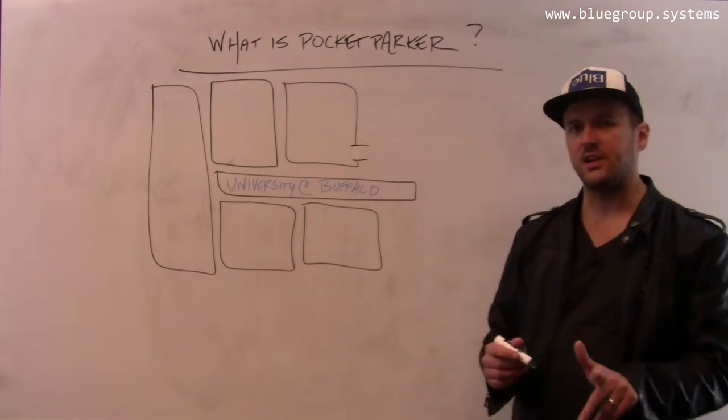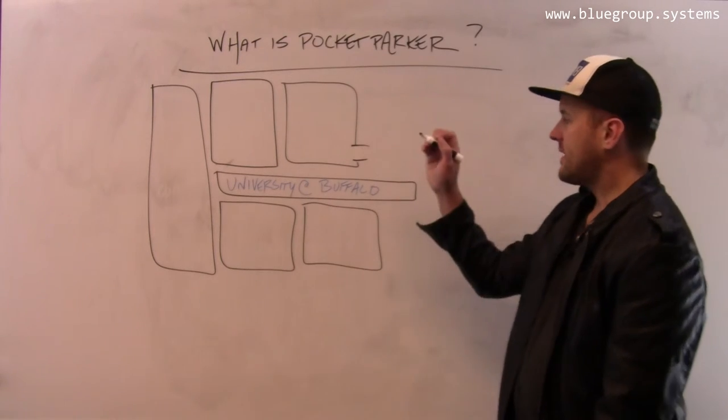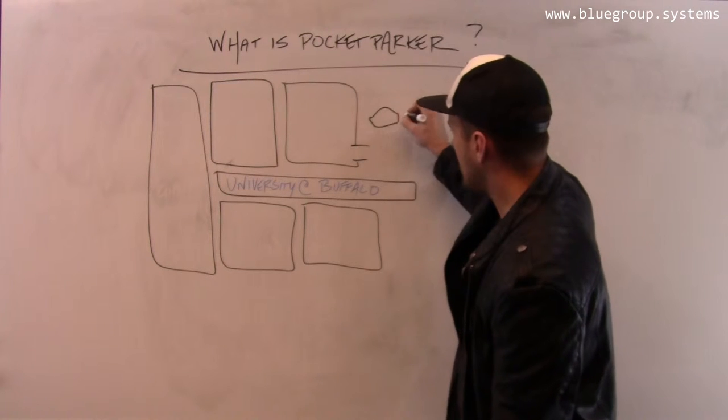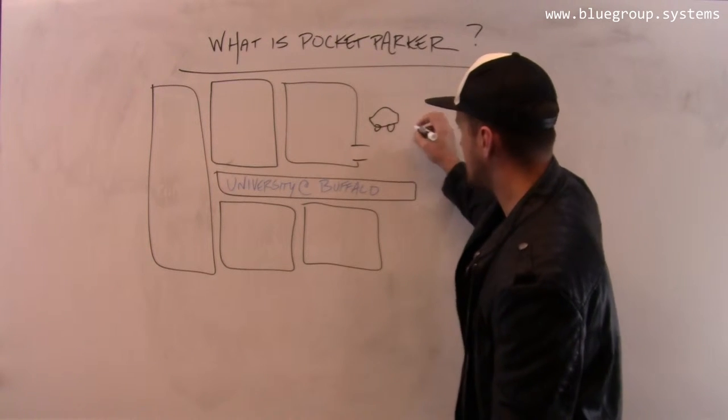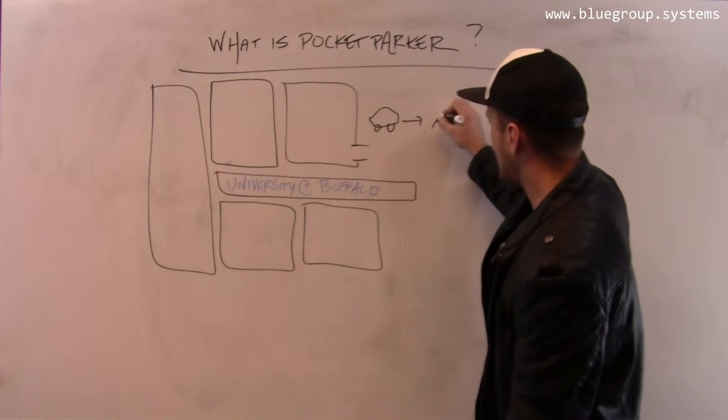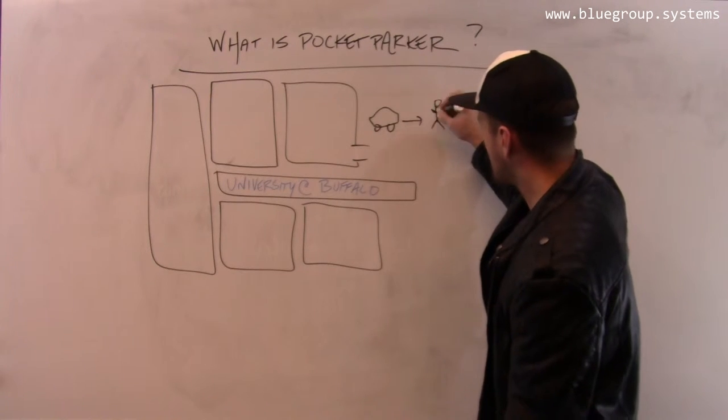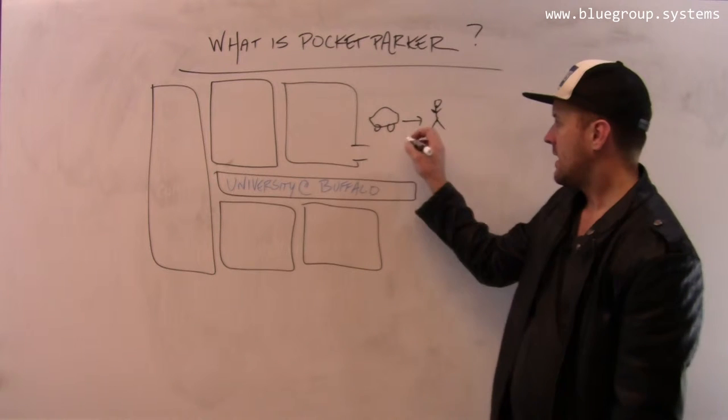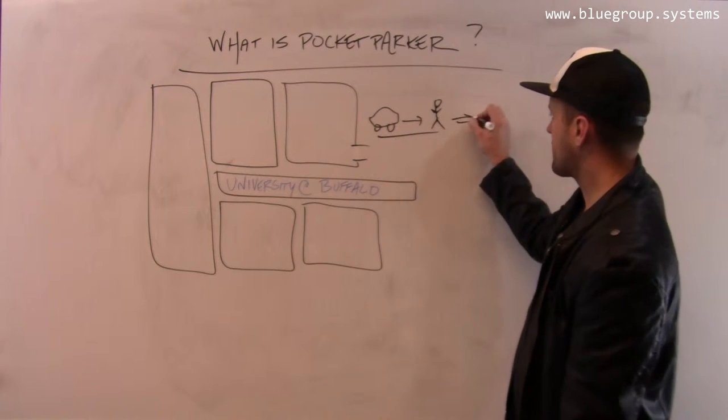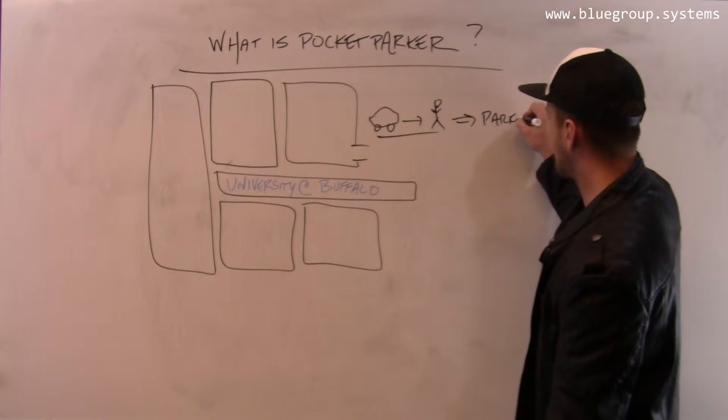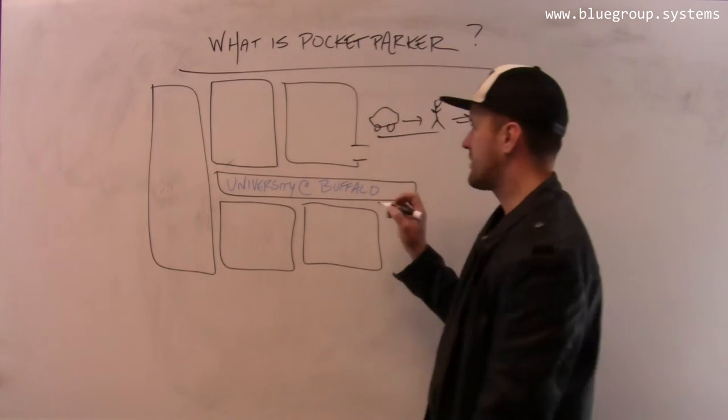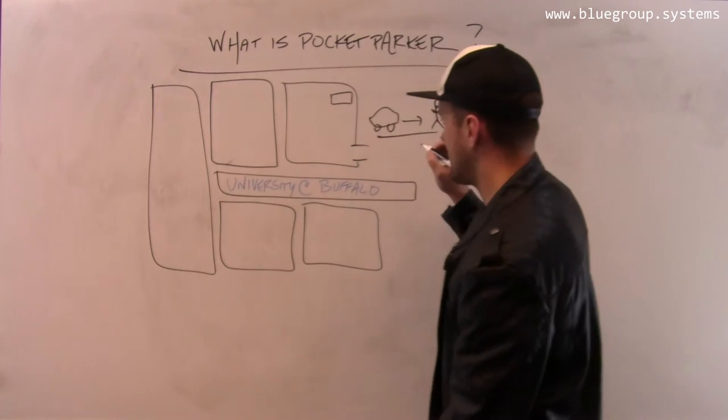The core observation here is that there are some interesting transitions that we can exploit. So when I'm in my car and then I get out and I start walking, if this transition happens inside a parking lot, then I assume that this person has parked. They drove into the lot, got out, walked away from their car. This is a parking event. And so there now is an additional car in this lot.